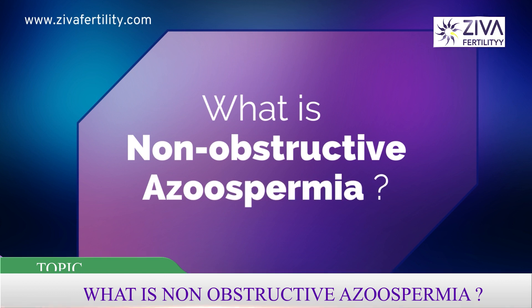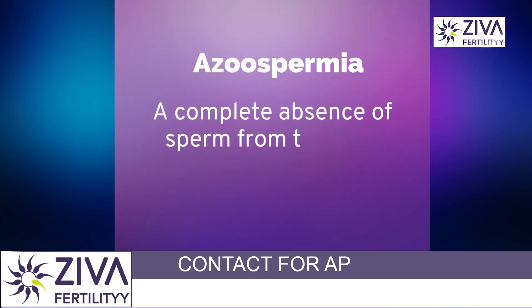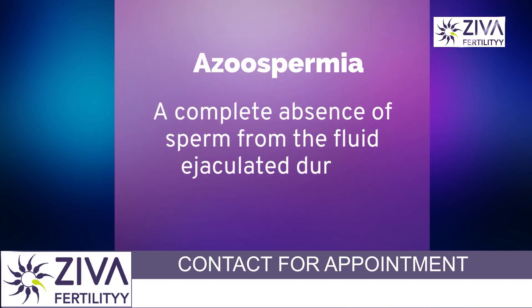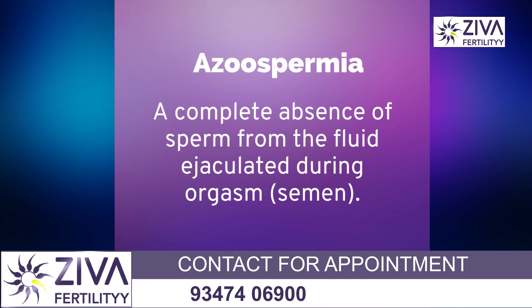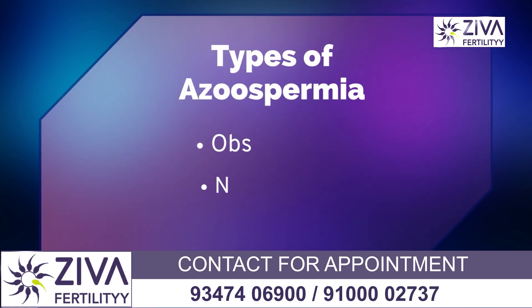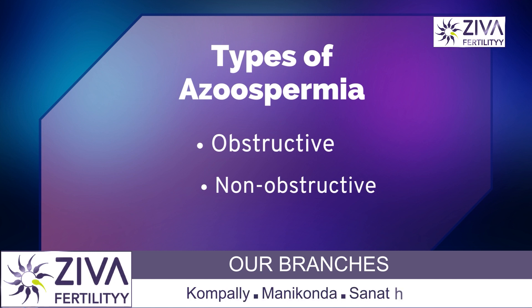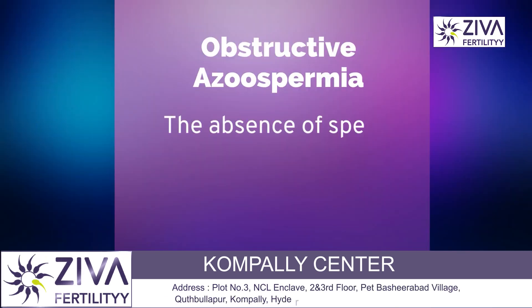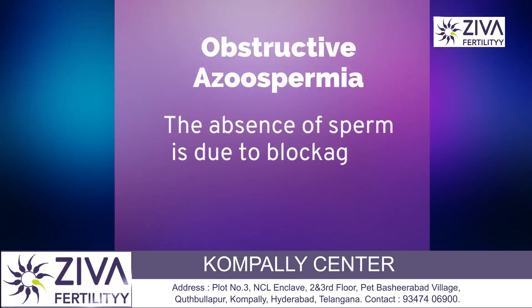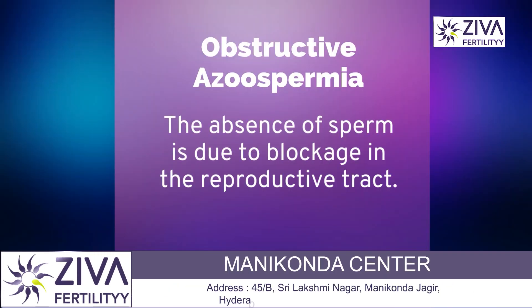Azoospermia is the lack of sperm in an ejaculate, in a semen sample. Azoospermia can be broadly divided into two types: obstructive and non-obstructive. Obstructive is where there is an obstruction in the male reproductive tract, due to which sperm production is happening but sperms are not coming outside.